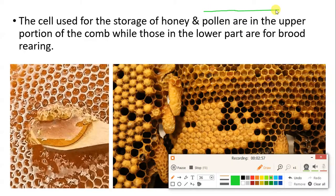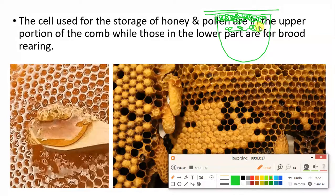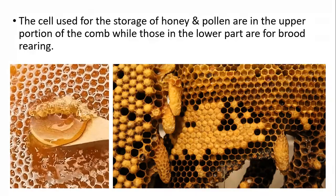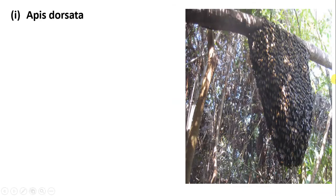Regarding honey storage in the hive: the hive hangs downward from a tree branch, and the storage of honey is always in the upper portion of the comb where it is attached to the tree branch. Below the honey storage is the pollen storage, and the center region and lower part contain the brood cells.